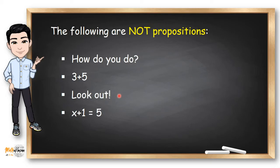While the following are not propositions: How do you do and look out are not propositions because they are not declarative sentences. Three plus five is not a complete mathematical sentence, so it will be difficult for us to determine if it's true or false. X plus one equals five is neither true nor false because X could be any value.